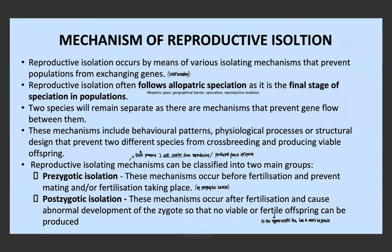Looking at mechanisms of reproductive isolation: reproductive isolation occurs by means of various isolating mechanisms that prevent populations from exchanging genes or crossbreeding. Reproductive isolation often follows allopatric speciation as it is the final stage of speciation. In allopatric speciation we have a geographical barrier, then speciation, then reproductive isolation. However, in sympatric speciation there is no geographical barrier — the two species remain separate because of mechanisms that prevent gene flow between them.